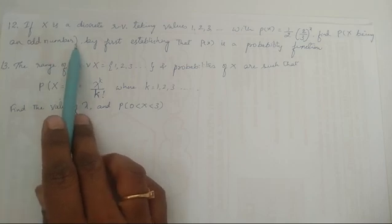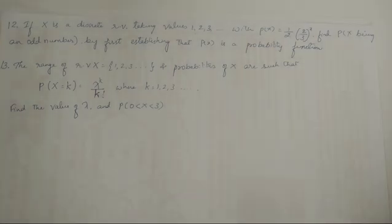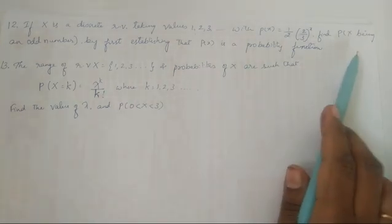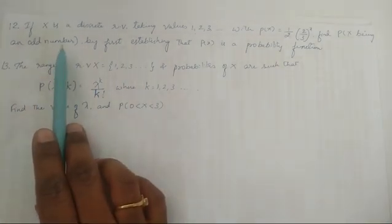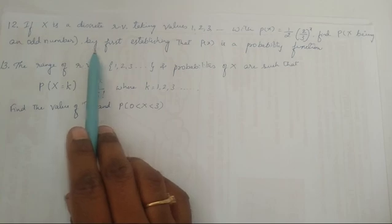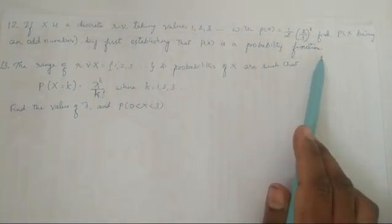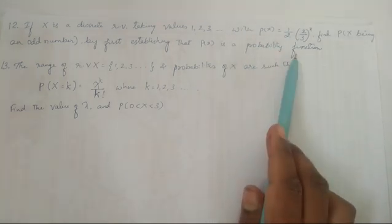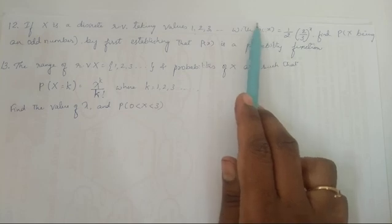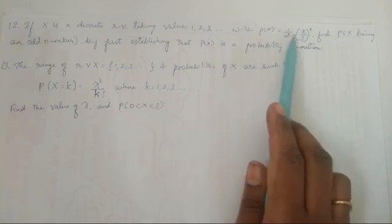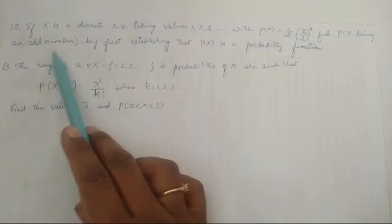In the previous problem we had a similar question where we were asked to find the probability of x being even, taking values 2, 4, 6, by first establishing that p(x) is a probability function. Here too, we first have to prove it is a probability function — that is, the summation of p(x) must equal 1 — and then find p(x being an odd number).